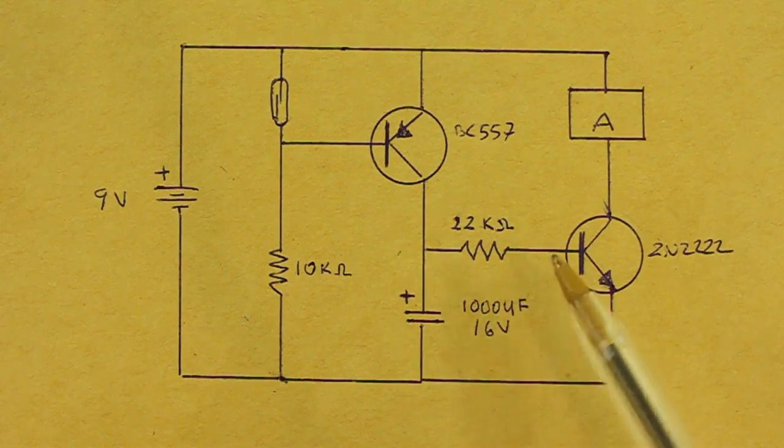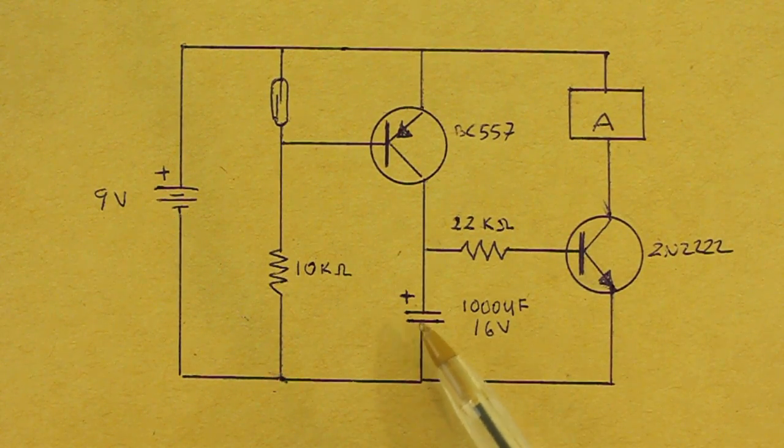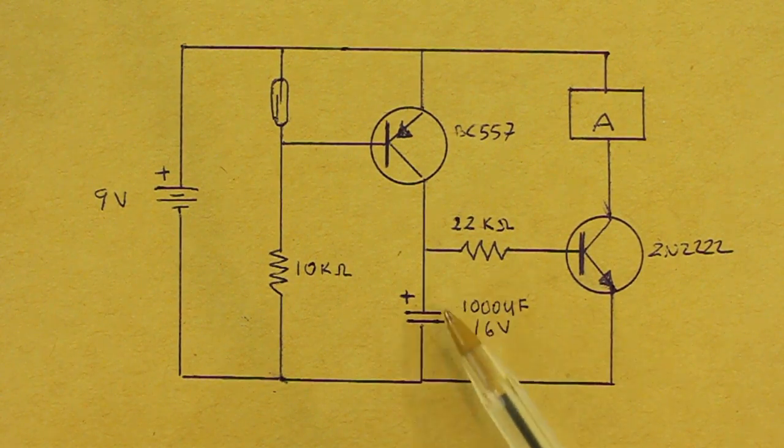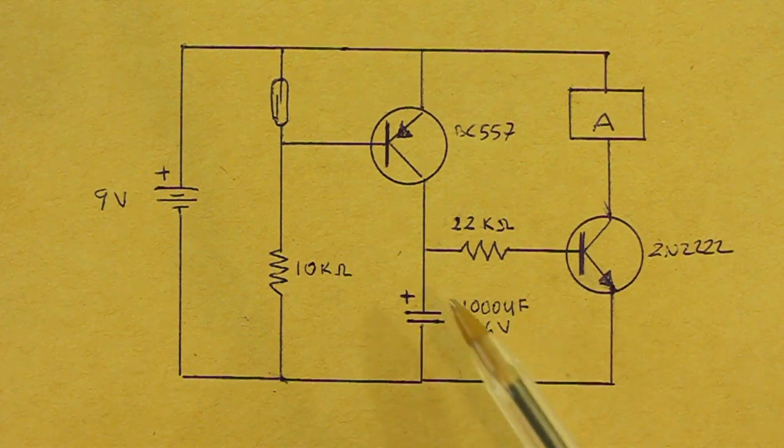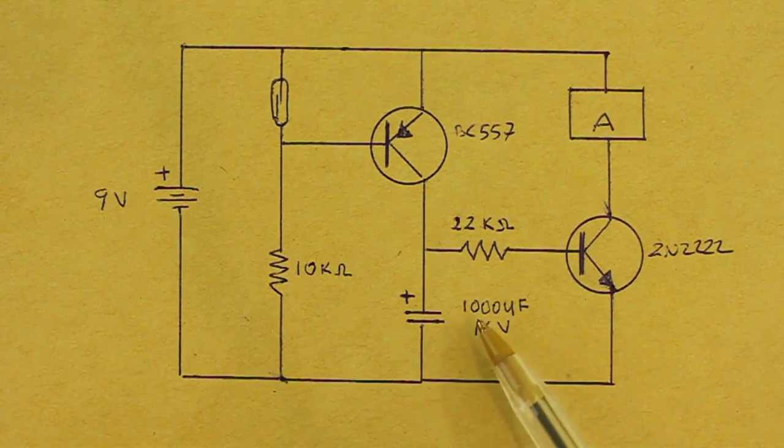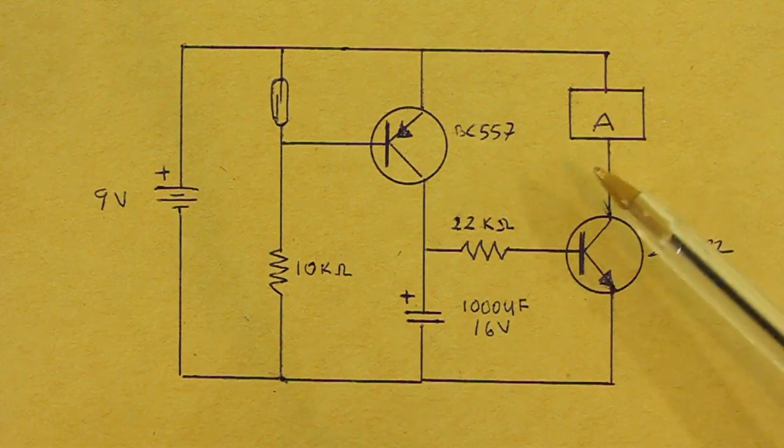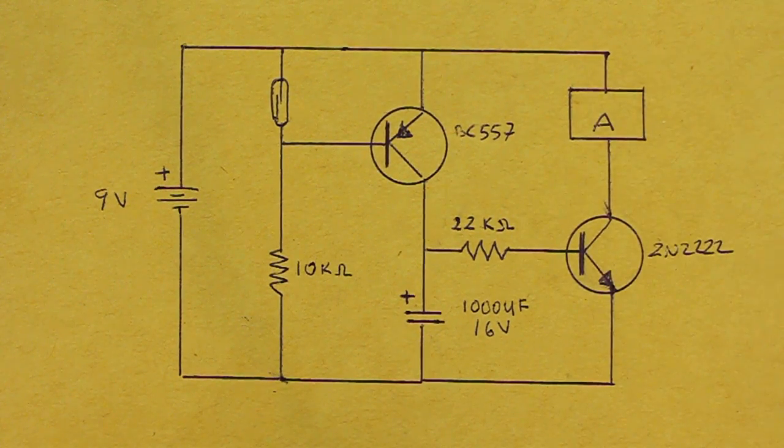The time is about one minute for a 1000uF capacitor. You can adjust this value to change the time that your alarm will be on.